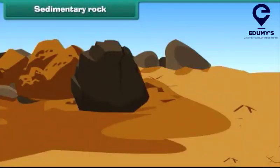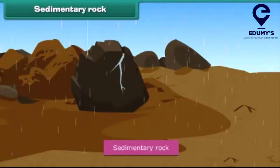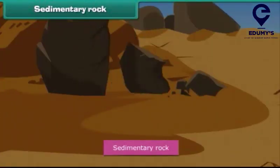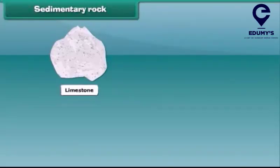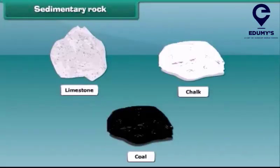Now let's discuss about sedimentary rock. Water and air break igneous rocks into smaller rocks, and consequently soil is formed. These pieces settle into layers, then these layers get compressed and harden, and finally become sedimentary rock. Sedimentary rock is usually soft to touch. Limestone, chalk, and coal are examples of this kind of rock.